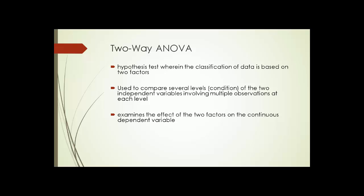Two-way ANOVA examines the effect of the two factors on the continuous dependent variable. It also studies the interrelationship between independent variables influencing the values of the dependent variable, if any.